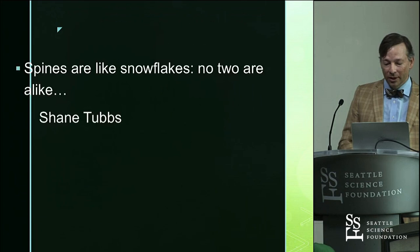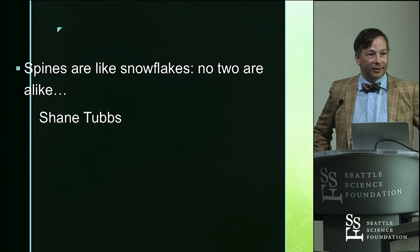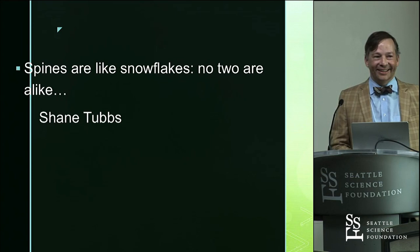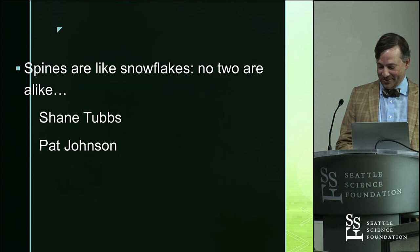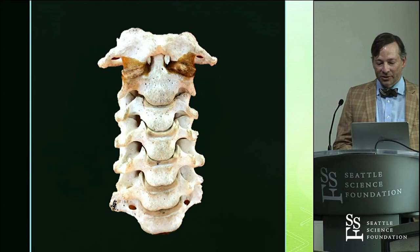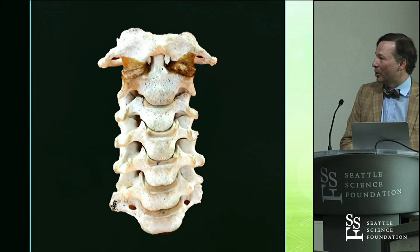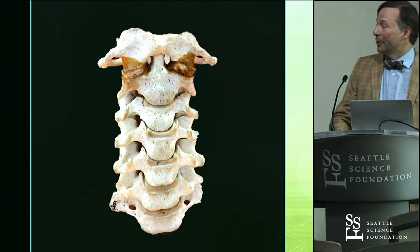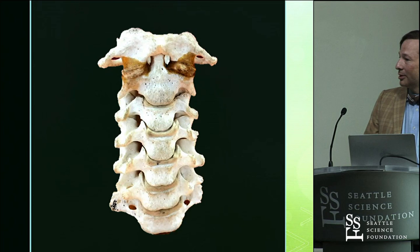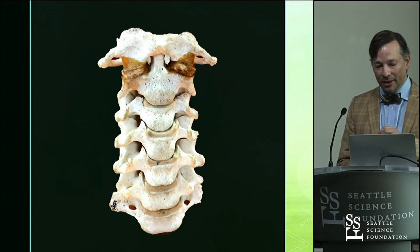A little phrase I like to say: spines are like snowflakes, no two are alike — attributed to Pat Johnson. I thought I'd take us from the very beginning, look at some of the basics of the osteology of the cervical spine, staying away from C1 and C2 — those are topics on their own — then move around the C-spine and add layers of neurovascular, muscular, and ligamentous structures, bringing it all together from the perspective of a spine surgeon.